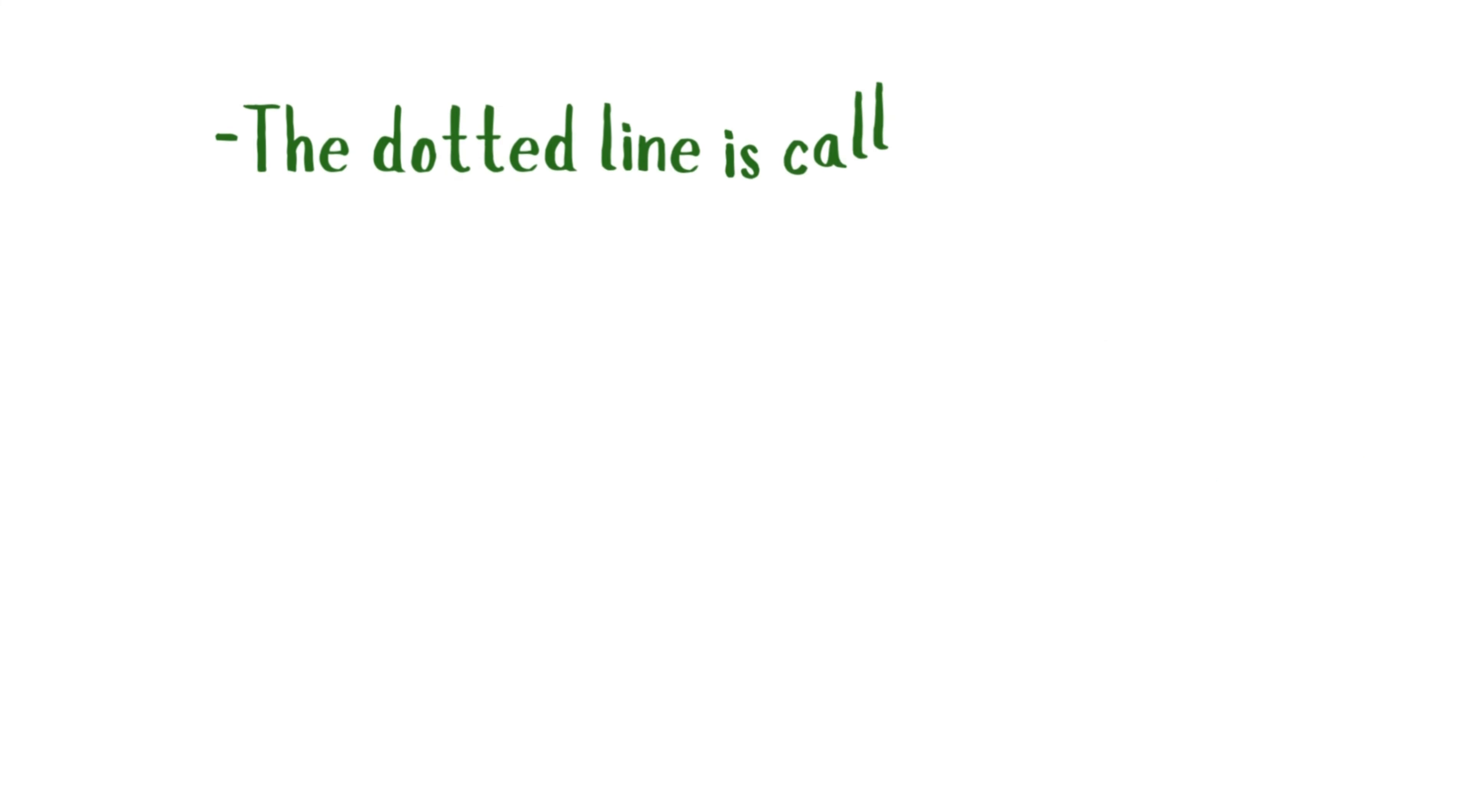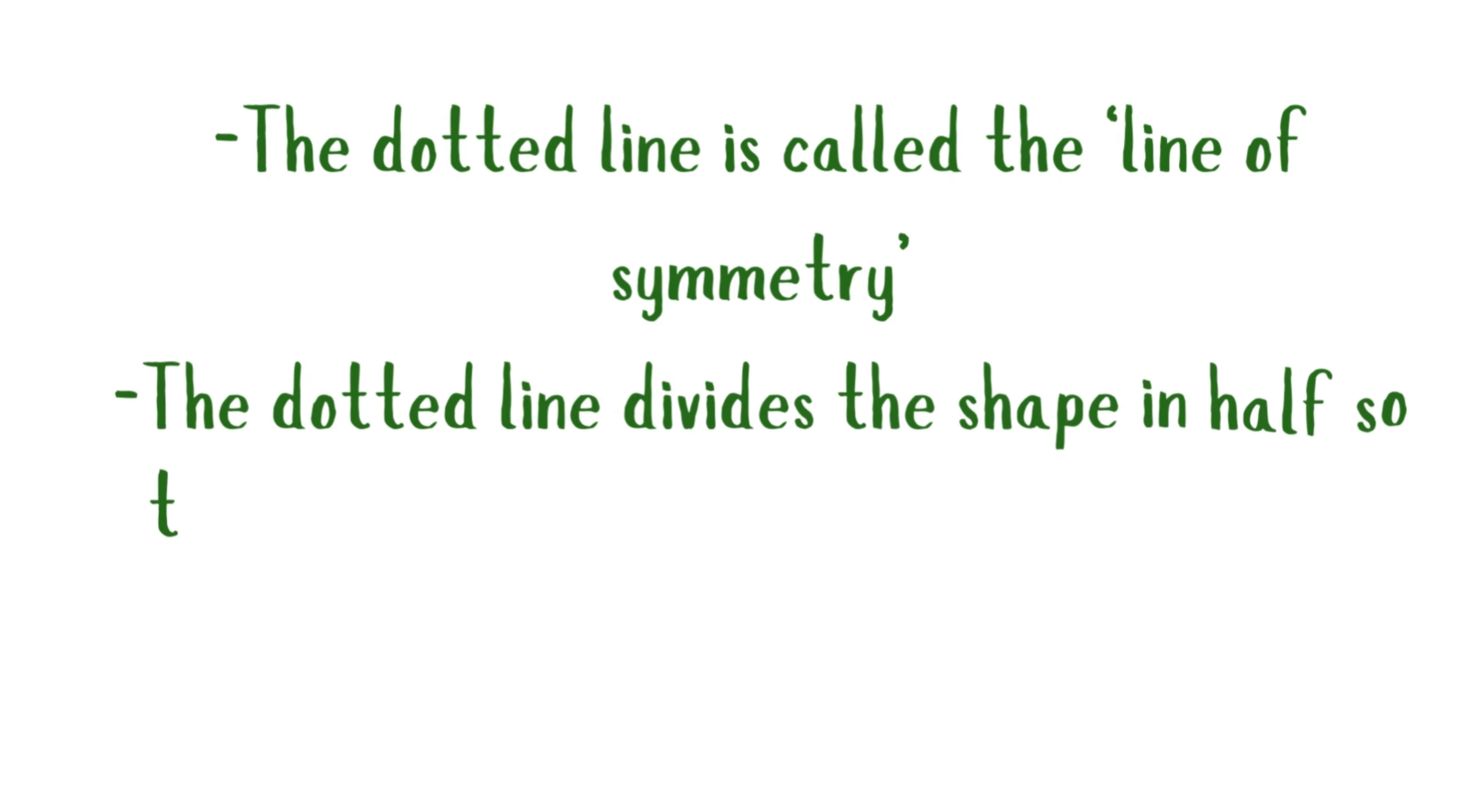The dotted line is called the Line of Symmetry. The dotted line divides the shape in half so that the two sides look exactly the same.